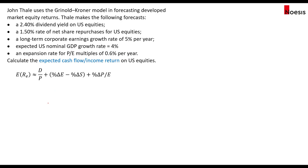What if you are asked to calculate the expected cash flow or income return on U.S. equities? That will be the dividend yield minus the percentage change in shares outstanding. Calculating this: 2.4% minus negative 1.5%, so this will be 3.9% expected cash flow return or income return.